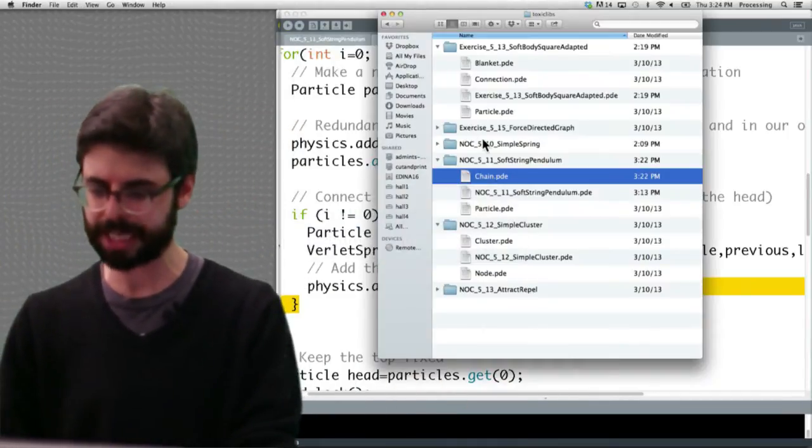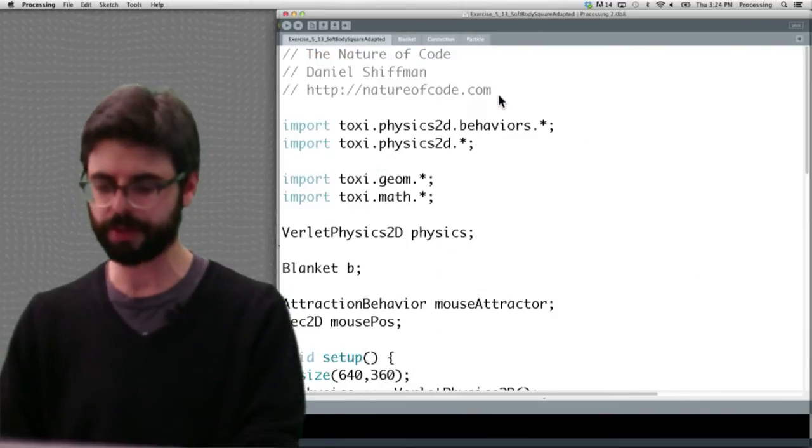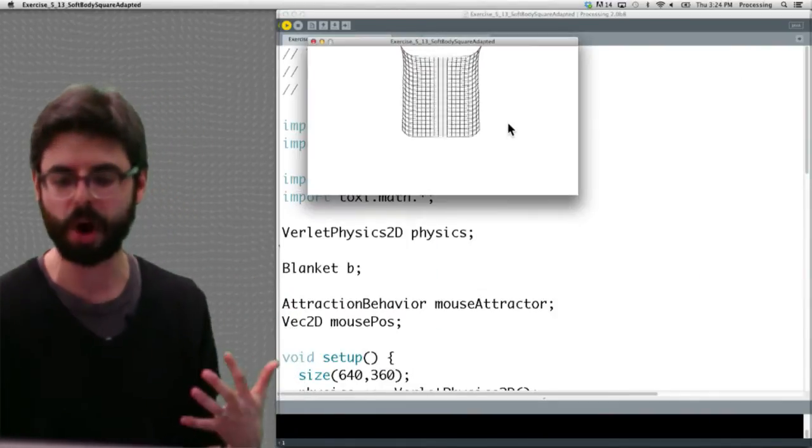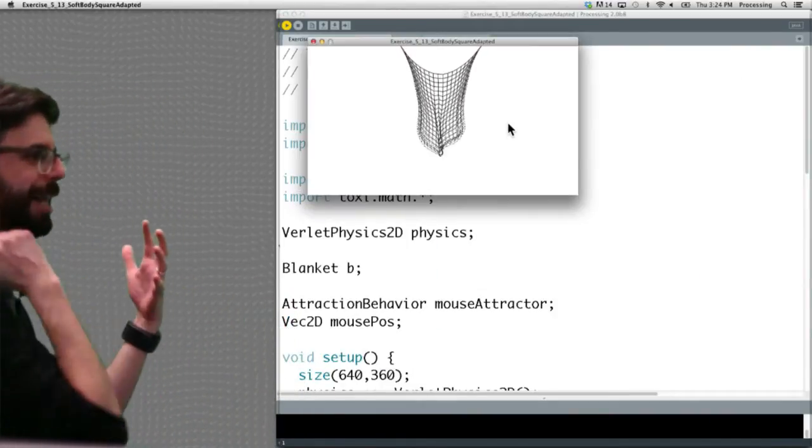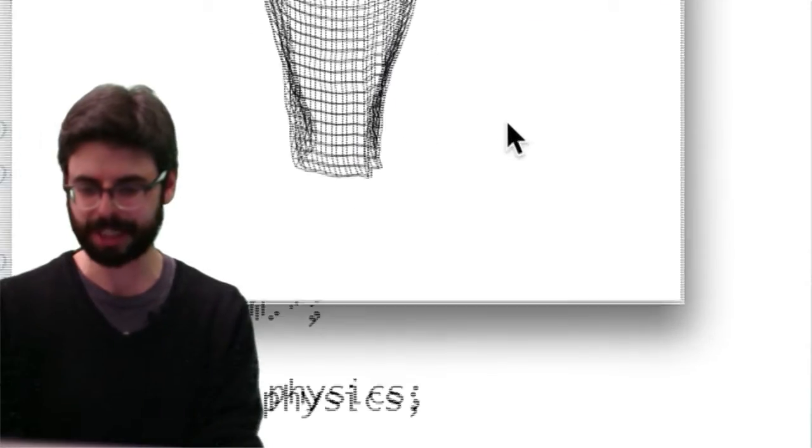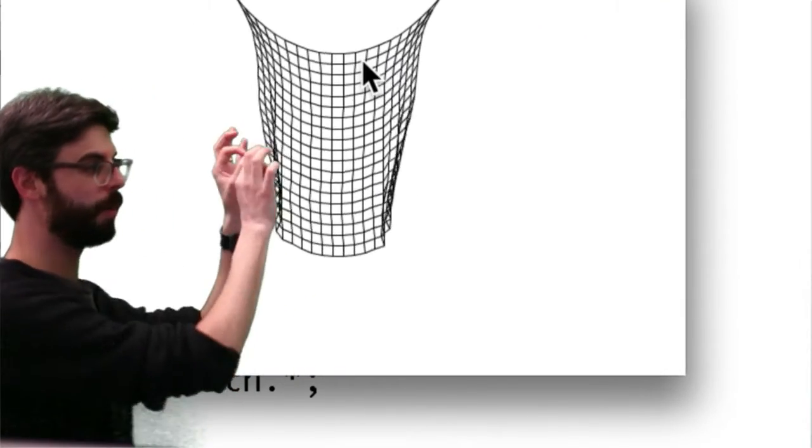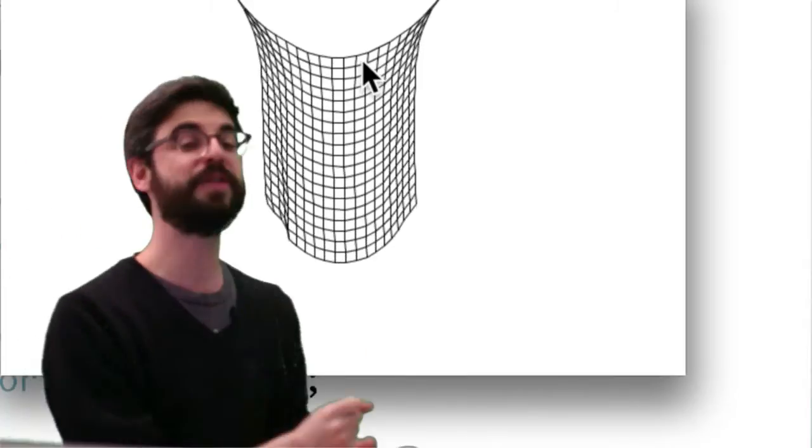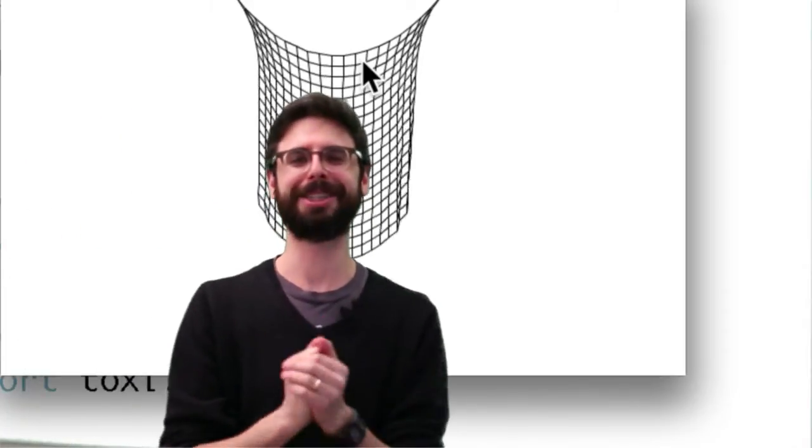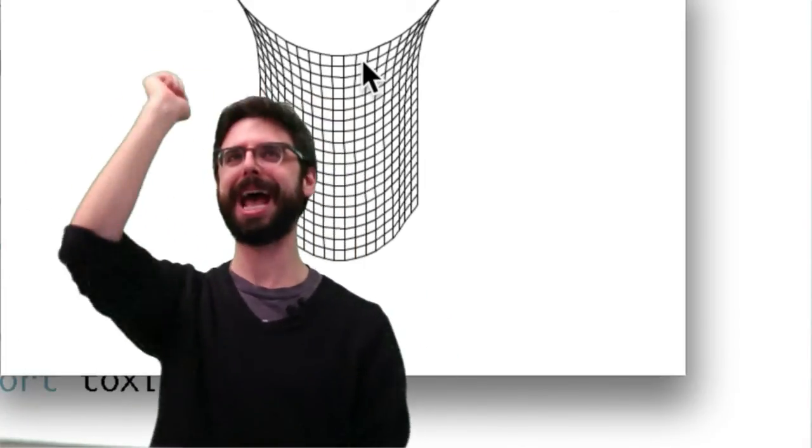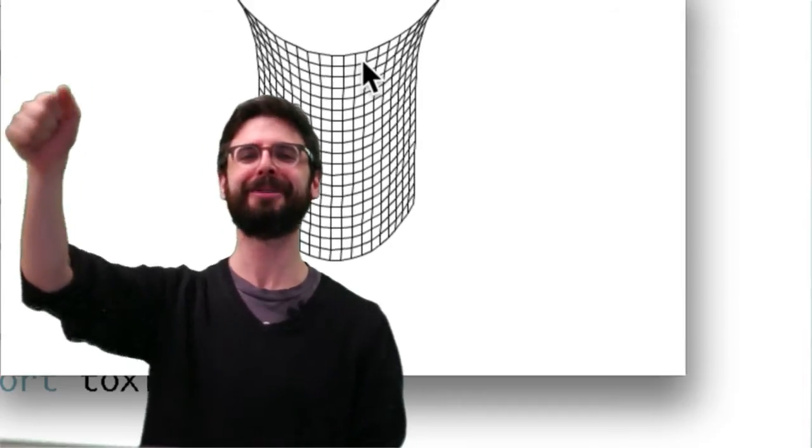Another example we can look at: what if we take all those particles and springs and instead of connecting them with a line, we connect them in a grid-like pattern?